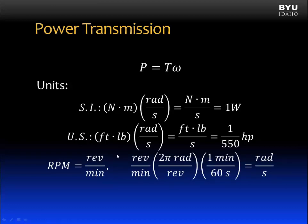Now for angular velocity, sometimes a more convenient unit of RPMs or revolutions per minute is given. Revolutions per minute can be converted to radians per second by multiplying by 2 pi radians per revolution multiplied also by 1 minute per 60 seconds. This gives us radians per second.